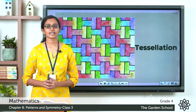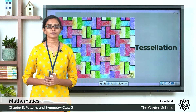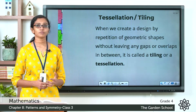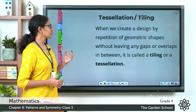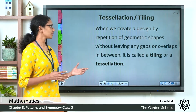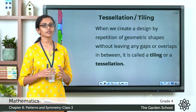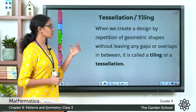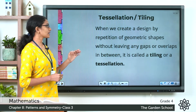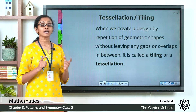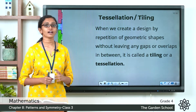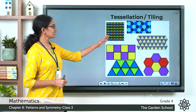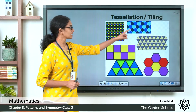What do you mean by a tessellation? A tessellation is when we create a design by repetition of geometric shapes without leaving any gaps or overlaps in between. When we create such a design, it is called a tiling or a tessellation. You can see a few examples of tessellations here.